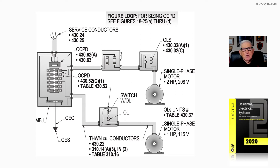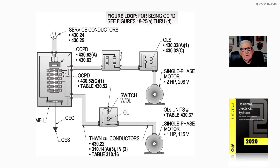Article 430 deals with motors. Get to Article 430 in the Table of Contents and scroll down to Part 2: Sizing Branch Circuit Conductors. The Table of Contents will send the user over to Part 2 in the NEC of Article 430.